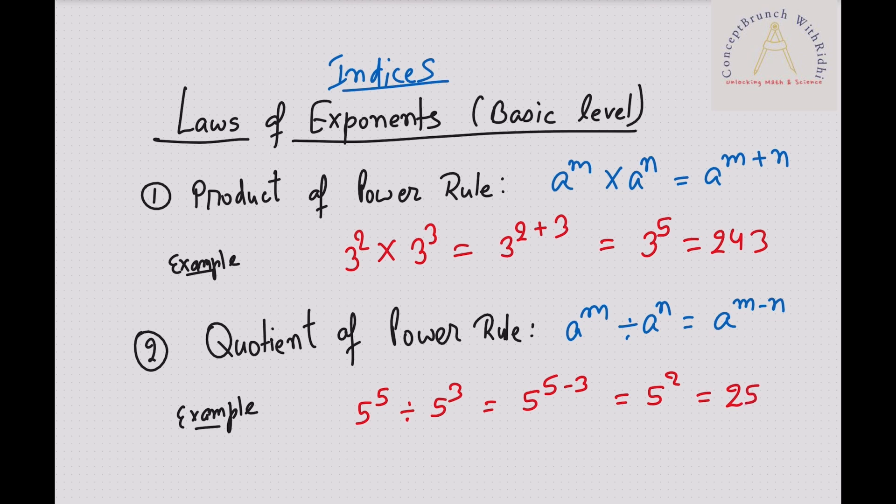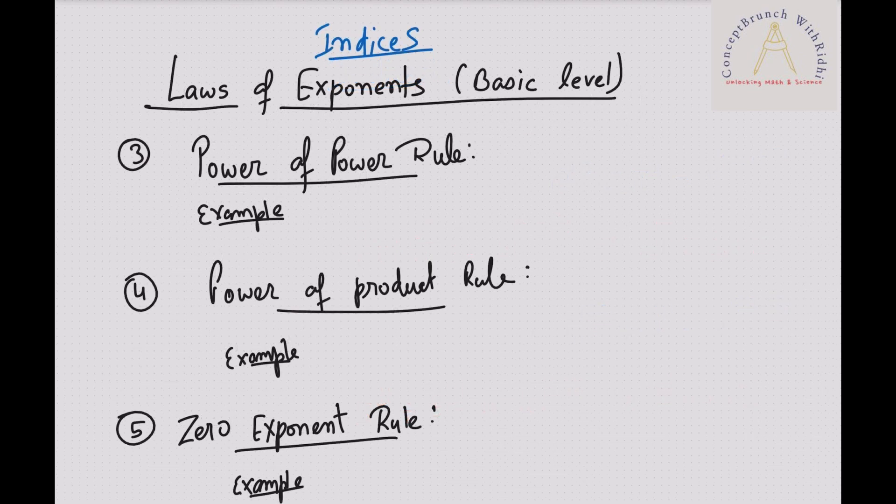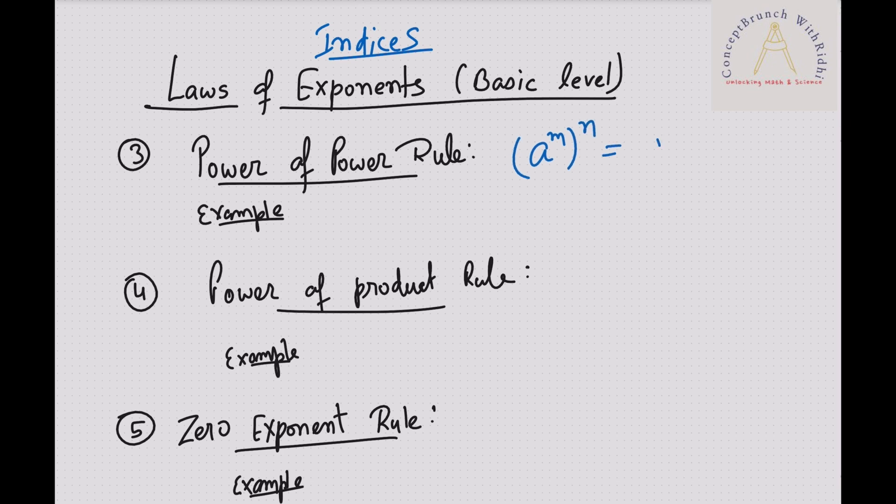Third rule is the power of power rule. In that it says a to the power m, to the power n, simply we can write as a to the power m times n. For example, over here we can write as suppose 3 square to the power of 3. So we can write 3 to the power 2 times 3, that is 3 to the power 6.